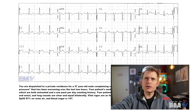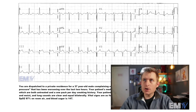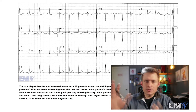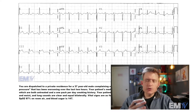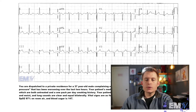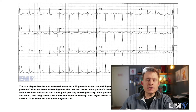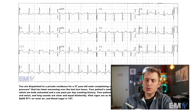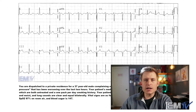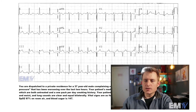Now if this were a regular six-second strip on a static cardiology card, that rhythm interpretation would be fine. But because we're looking at a 12-lead, we need to examine each lead grouping to determine if there's something more significant going on. I prefer to examine the anterior septal leads first — V1 through V4. These precordial leads correspond to the LAD, the left anterior descending coronary artery, also known as the widowmaker vessel.